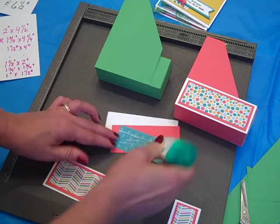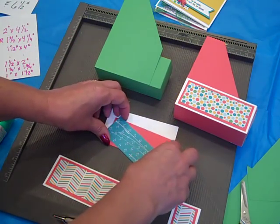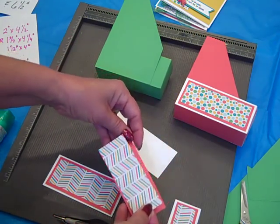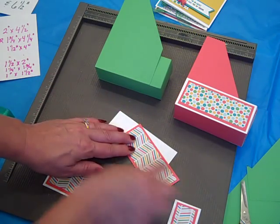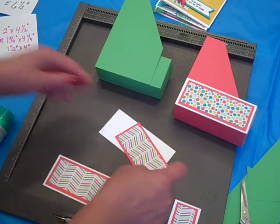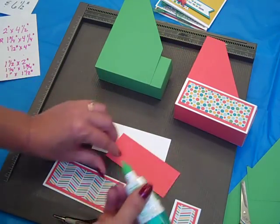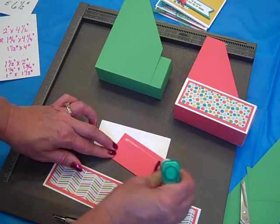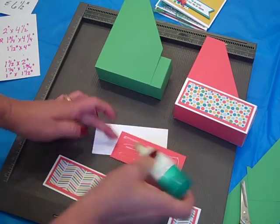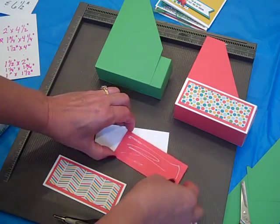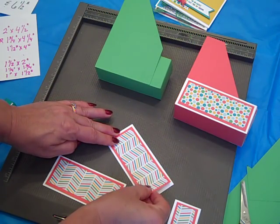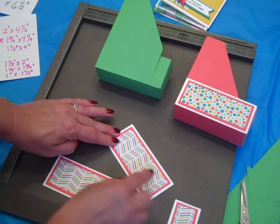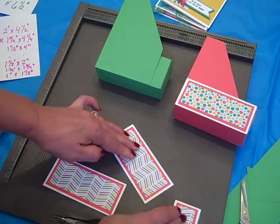And so then I'm just going to take little beads of Tombow and put these together. So we want to use the multi-purpose glue. You could use snail on this too. I just like the extra strength that Tombow multi-purpose has for my 3D projects. And again as you can see, I'm barely putting anything on it for the liquid glue but it really does hold super strong.